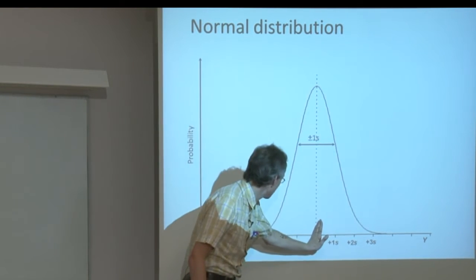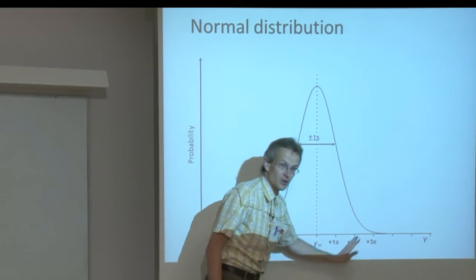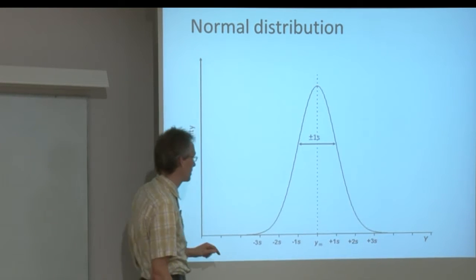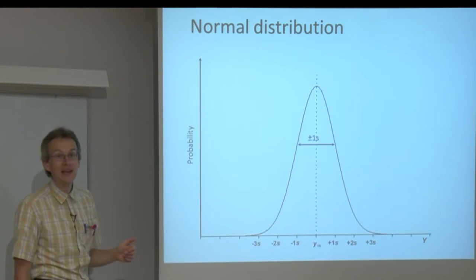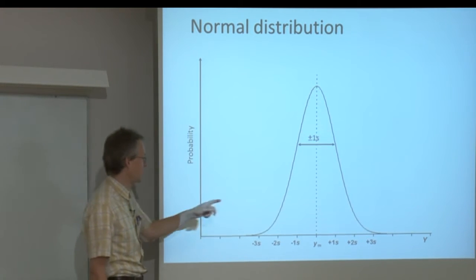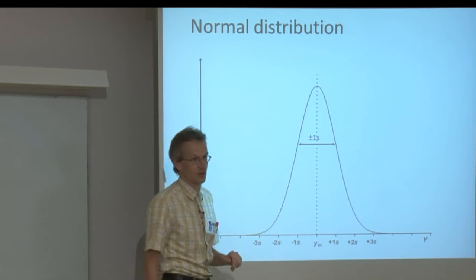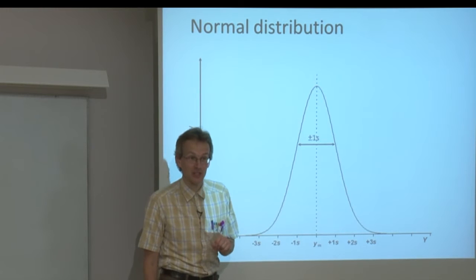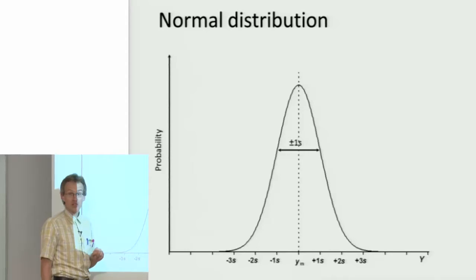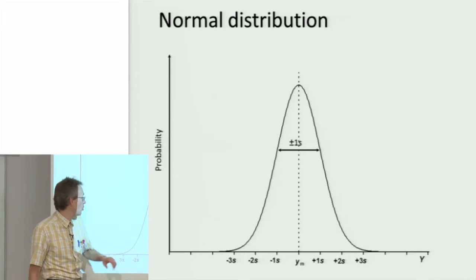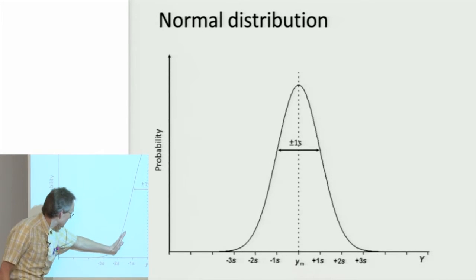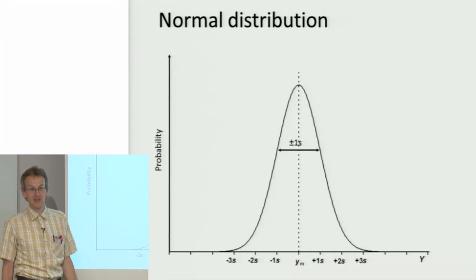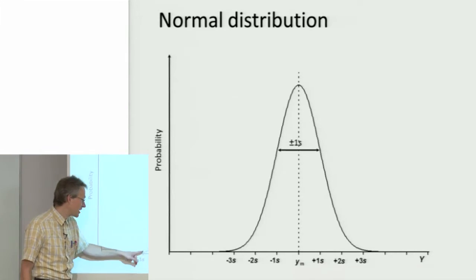As we depart from the mean value to either of these two sides, the probability gradually decreases. So this is basically a probability density graph. The highest probability is in the middle, the lowest on the sides. Even though the probability gradually and quite sharply decreases as we move away from the mean value, it never really becomes zero.